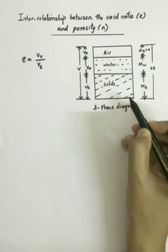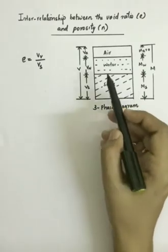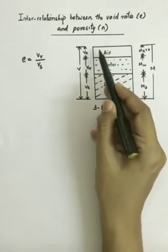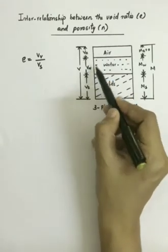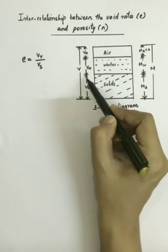When you look at the three-phase diagram, the ratio between the volume of air plus water together, known as volume of voids, divided by the volume of solids will give you the void ratio.